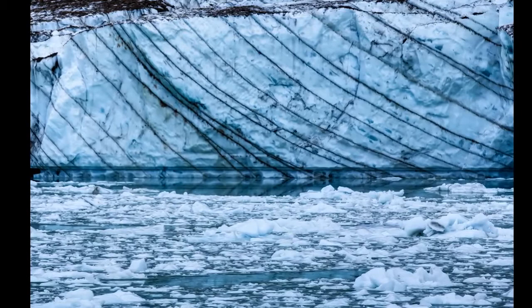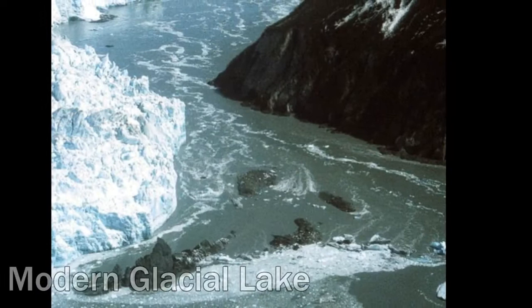A process known as isostatic rebound sped up the emptying of Lake Agassiz into Hudson Bay. As the ice and water that had compressed the Earth's crust was removed, the land returned to its pre-glacial elevation. When the process was complete, only lakes Winnipeg, Winnipegosis, and Manitoba's other Great Lakes remained as vestiges of their glacial forerunner.